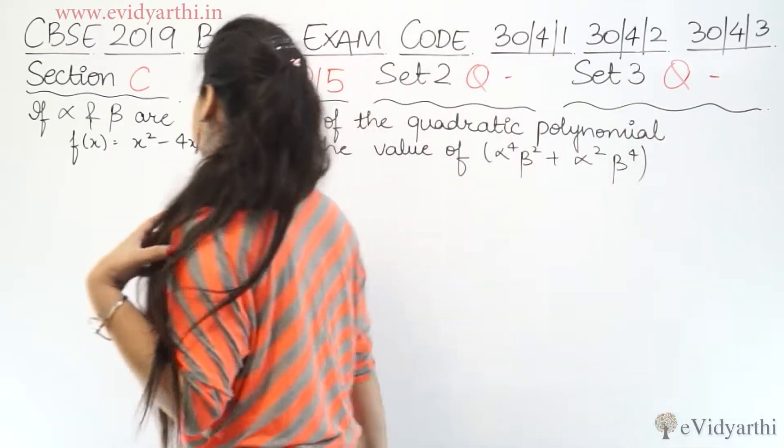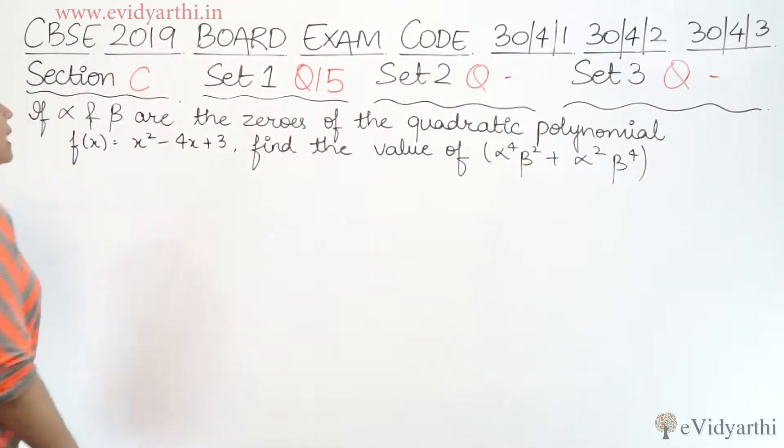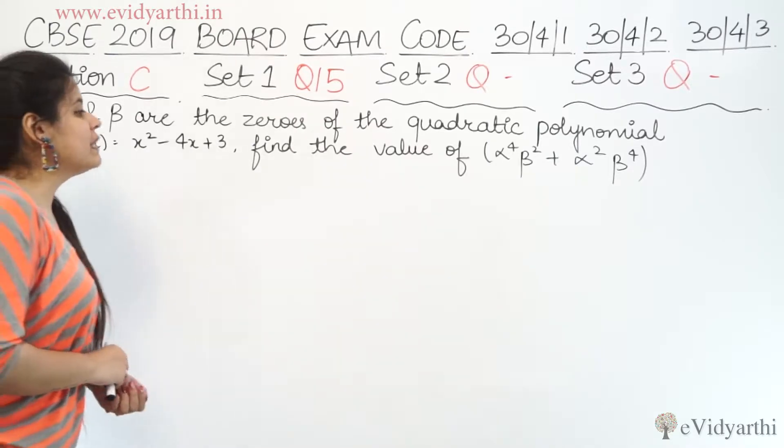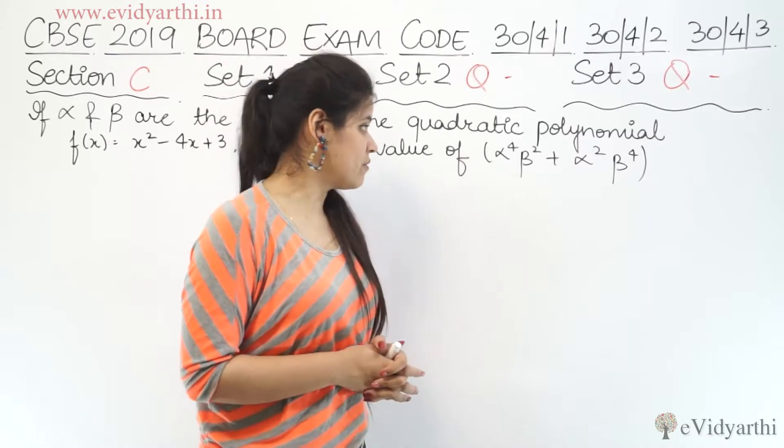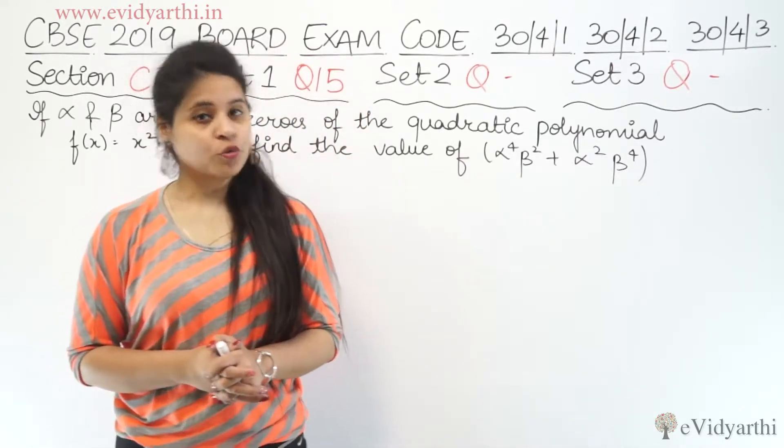The question says, if alpha and beta are the zeros of the quadratic polynomial f(x) = x² - 4x + 3, find the value of α⁴β² + α²β⁴.